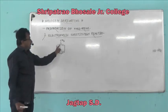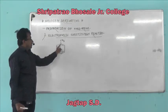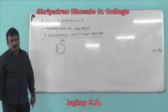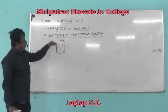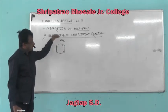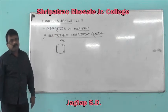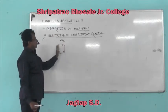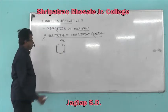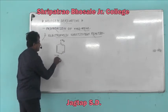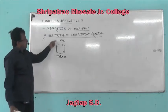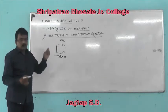Here, one hydrogen atom of benzene is replaced by a methyl group. Monosubstituted benzene contains only one substituent. Therefore, it is called Monosubstituted Benzene. Monosubstituted benzene is named as Toluene, or it is also known as Methylbenzene.